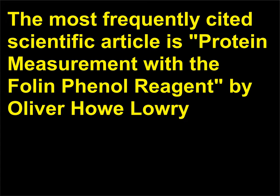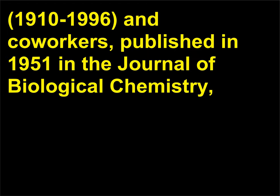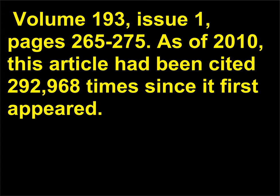The most frequently cited scientific article is 'Protein Measurement with the Folin Phenol Reagent' by Oliver Howe Lowry, 1910–1996, and co-workers, published in 1951 in the Journal of Biological Chemistry, Volume 193, Issue 1, pages 265–275. As of 2010, this article had been cited 292,968 times since it first appeared.